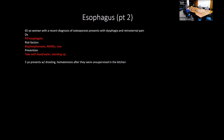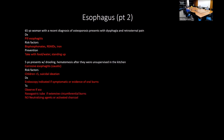A 5-year-old presenting with drooling and hematemesis after being unsupervised in the kitchen — that's corrosive or caustic esophagitis. Risk factors include young children and patients with suicidal ideation. Diagnosis: endoscopy is indicated if symptomatic or if there is evidence of oral burns. Treatment: observe if asymptomatic; NG tube for extensive circumferential burns. Do NOT use neutralizing agents or activated charcoal — neutralizing agents cause an exothermic reaction.